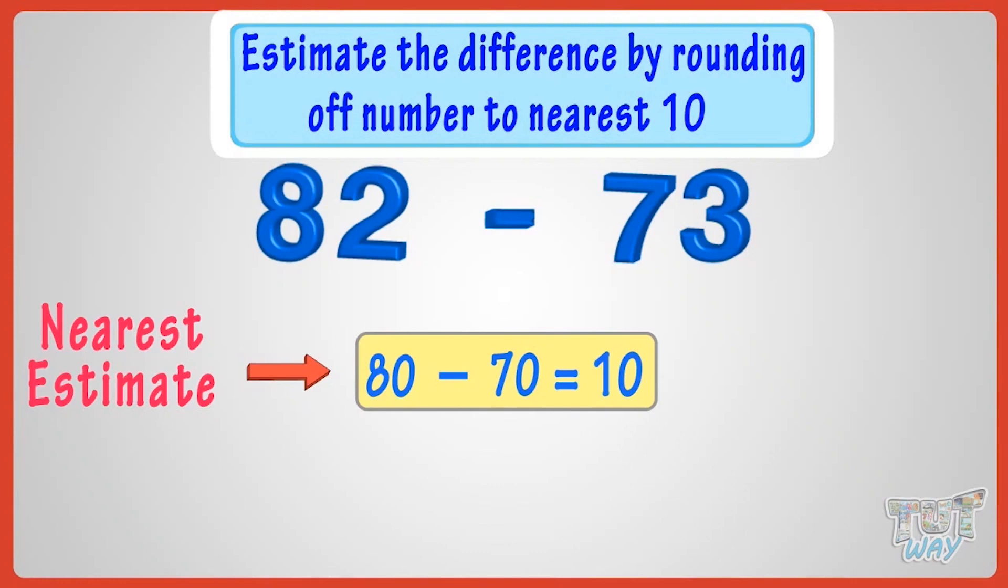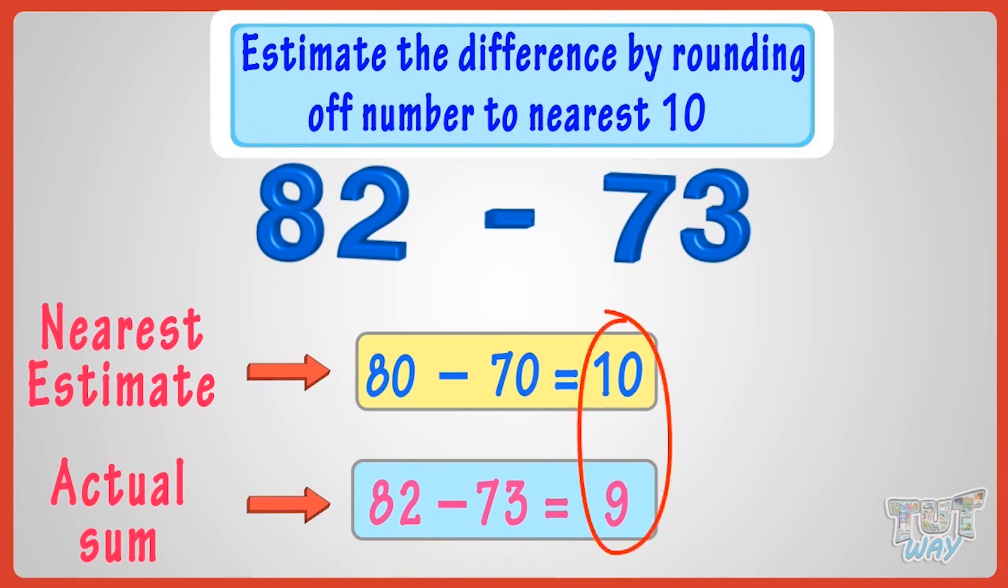Now, let's compare the estimate with the actual answer. 82 minus 73 is 9. So, your estimate, our estimate is very very near. Our estimate was 10 and the actual difference is 9. Good!